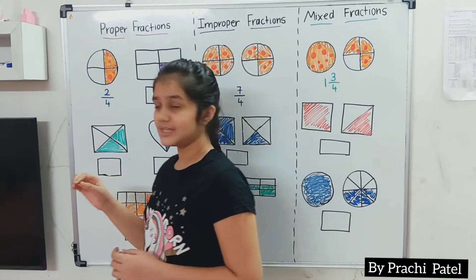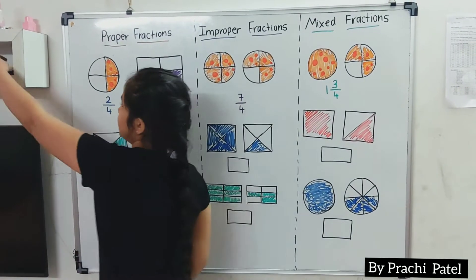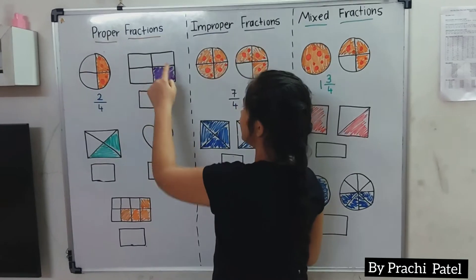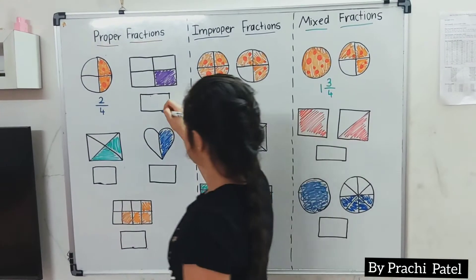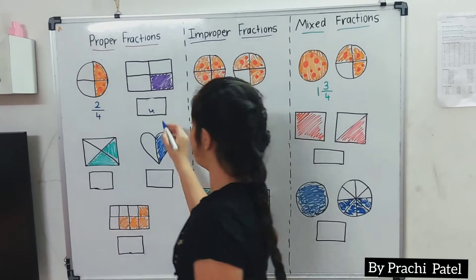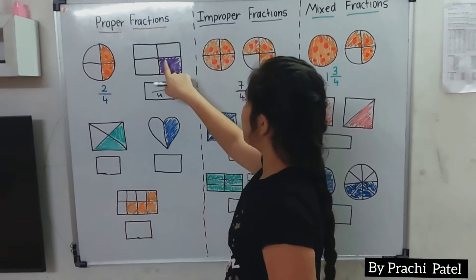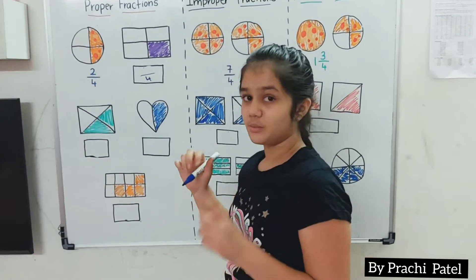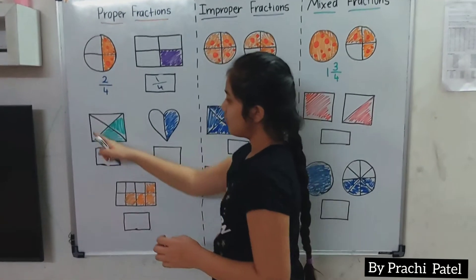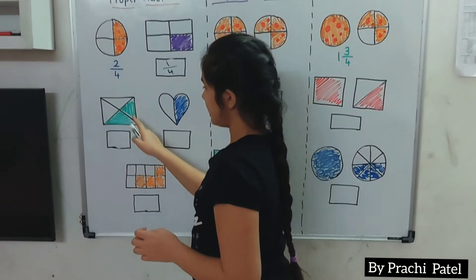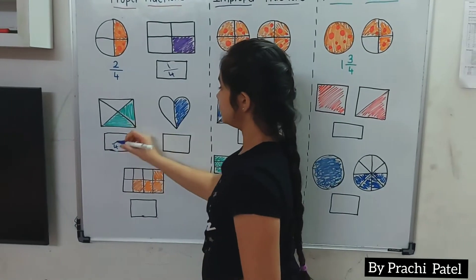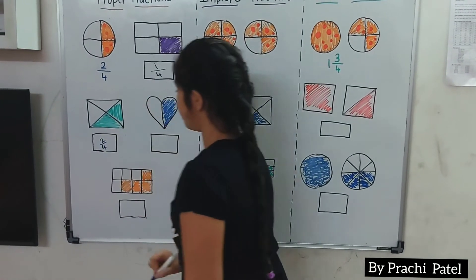Now let's solve some problems about fractions. We have 4 parts, so let's write 4 in the denominator, and we have one part colored, so we write 1 in the numerator. Now there are a few more: we have 4 in the denominator, and 1 and 2 in the numerator.